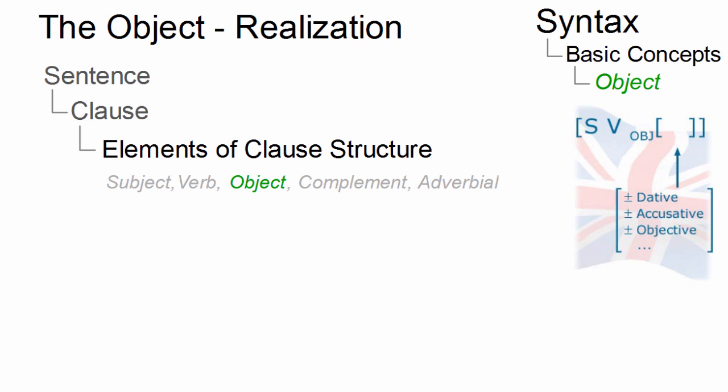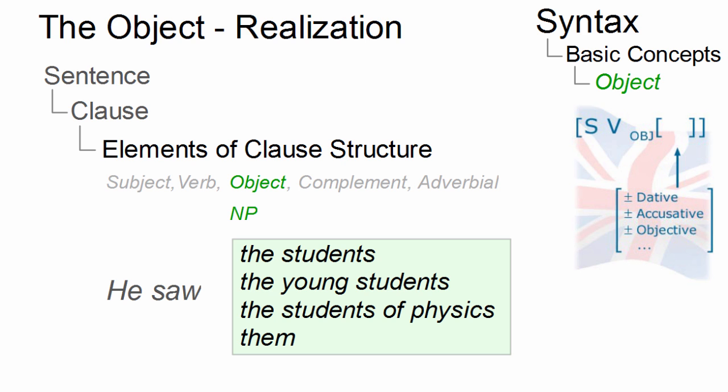In simple finite declarative sentences with a transitive verb, it is always present, it follows the verb, and formally, it can be realized by a noun phrase, as in these four examples.